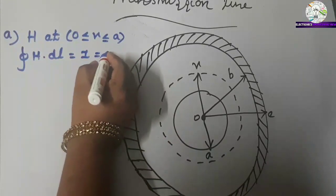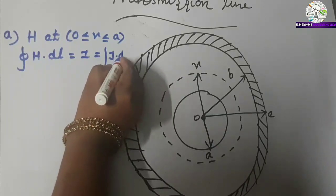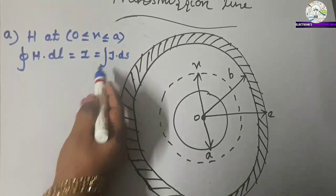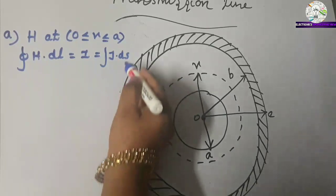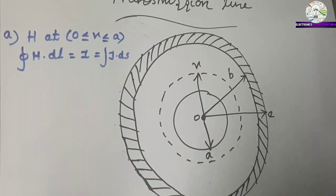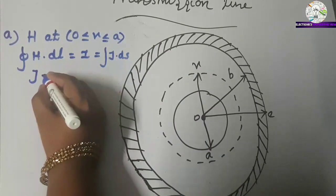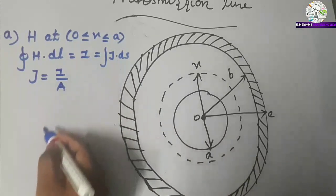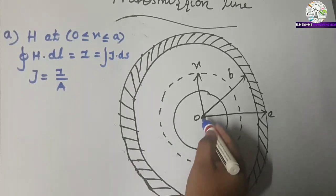The current value is equal to the surface integral of J dot dS, where J is the current density at a specific region. Generally, J is equal to I divided by A, where A is the area of the circular conductor of radius A.